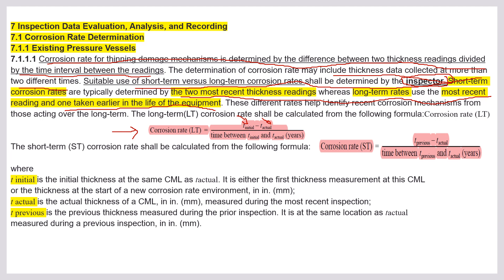In 2000 the thickness is 20 mm (t_initial = 20 mm) and t_actual is now 10 mm. The time between 2000 and 2022 is 22 years. So the long-term corrosion rate = (t_initial − t_actual) / years = (20 − 10) / 22 = 10/22. That result is the long-term corrosion rate.